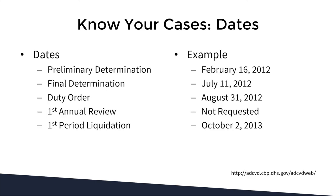I encourage you to really pay attention to dates. You should know the dates of everything that has happened with goods subject to anti-dumping and countervailing — from the very beginning when the preliminary determination happened through every sunset review and annual review. For our example: the preliminary determination date was February 16, 2012; the final determination happened on July 11, 2012; the duty order was issued on August 31, 2012; and because no first annual review was requested, the first period liquidation happened on October 2, 2013.